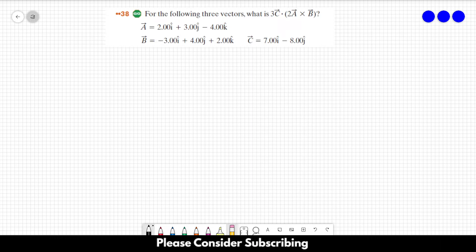Vector A is equal to 2 in the I direction plus 3 in the J direction minus 4 in the K direction.